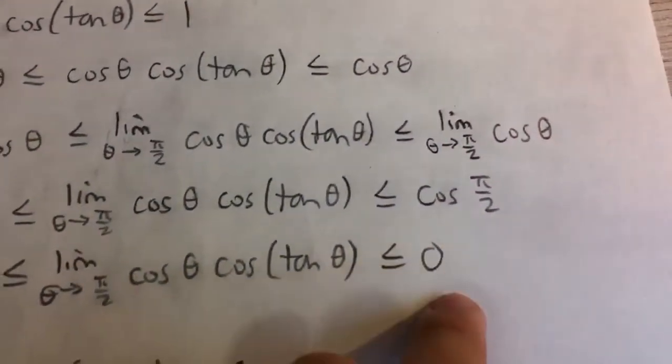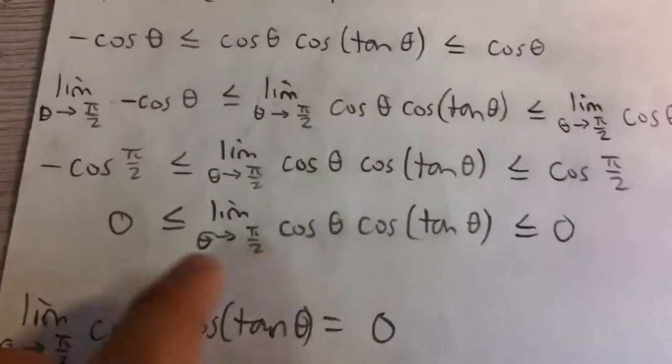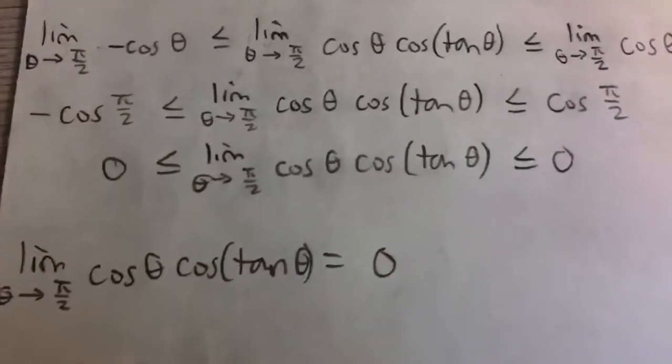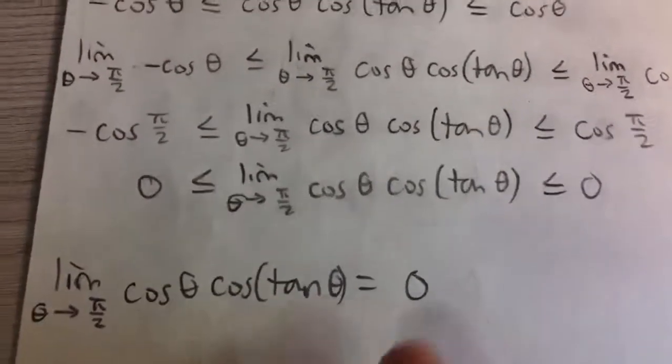Similarly on this side cosine pi over 2 is 0 and so our limit in the middle is greater than or equal to 0 and less than or equal to 0 which means that it must be equal to 0 and so by the squeeze theorem it's 0.